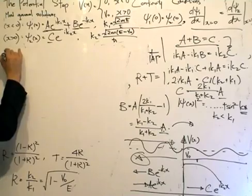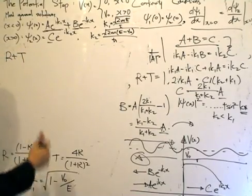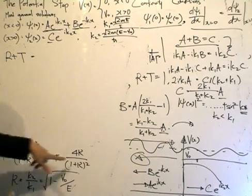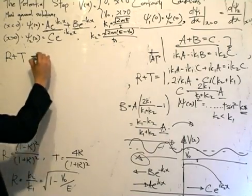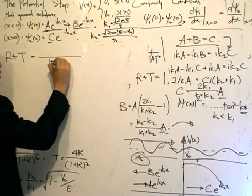Now the first one, we want to investigate what is R plus T. So R plus T is equal to just basically adding these two expressions together, the denominator stays the same, which is 1 plus kappa squared.